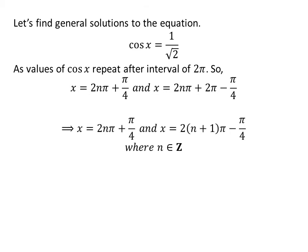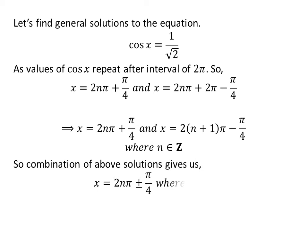Further simplification gives us the general solutions as 2 times n times pi plus pi upon 4 and 2 times n plus 1 times pi minus pi upon 4. Combining these, the general solution of the equation is 2 times n times pi plus or minus pi upon 4, where n is an integer.